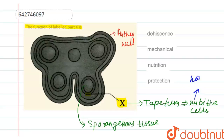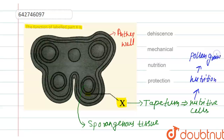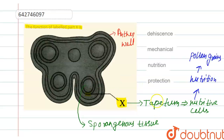The tapetum cells provide nutrition to the developing pollen grains inside the microsporangium. The development of pollen grains occurs there, and the tapetum is providing nutrition to those pollen grains. So the main function of tapetum is nutrition.